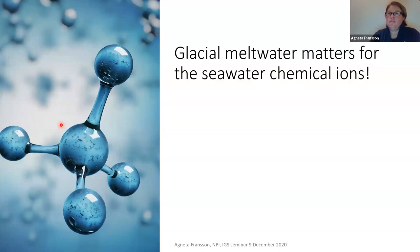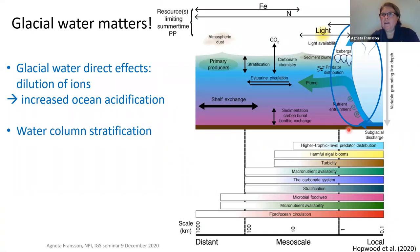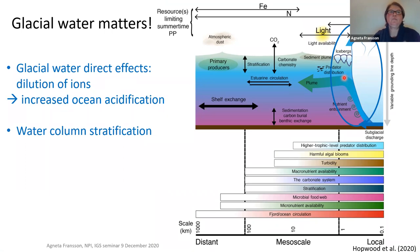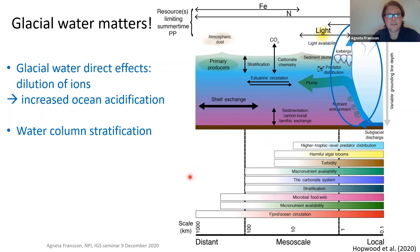Glacier meltwater matters for sea ice and seawater chemistry. The blue circle in the figure shows meltwater from the glacier: surface meltwater is very fresh, while subsurface glacier meltwater can contain sediment particles. The glacier water's freshening effect causes dilution of alkalinity, carbonate ions, and bicarbonate ions. This can lead to increased ocean acidification. Water column stratification is also an effect of this surface meltwater.